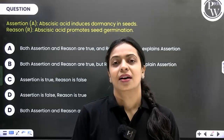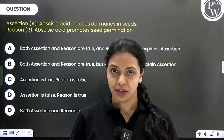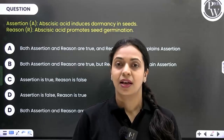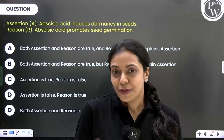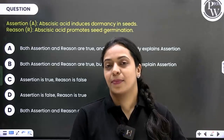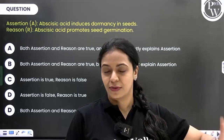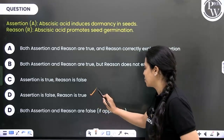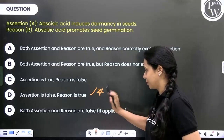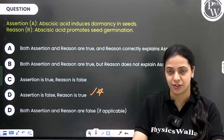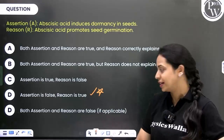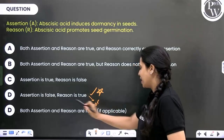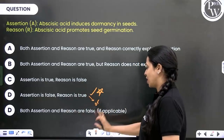Sometimes you can have the fourth option be both assertion and reason are false. After analyzing the NEET examination paper over the last few years, in most cases the fourth option is assertion is false but reason is true. Very rarely you might have both assertion and reason are false instead.